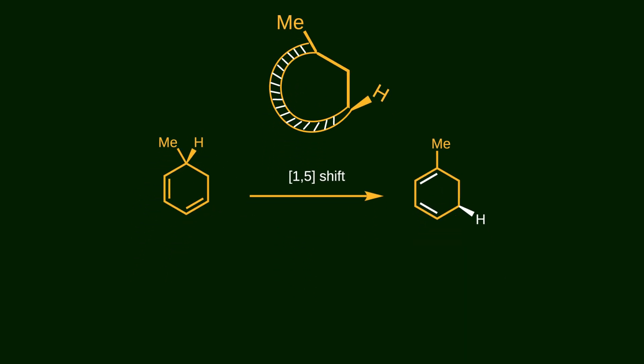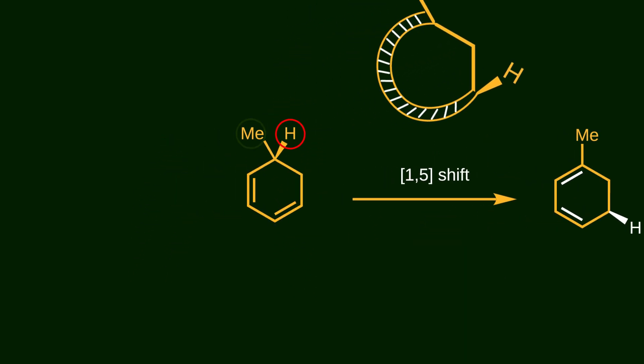Notice that migration of hydrogen is preferred over the methyl group. Because it has a spherical shape and a smaller size, so the energy required for migration of hydrogen is less than that of the methyl group.